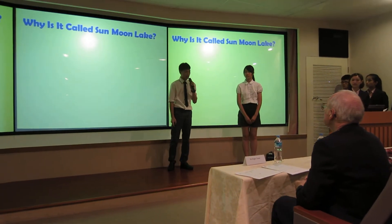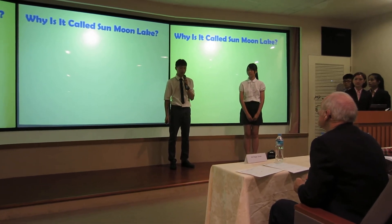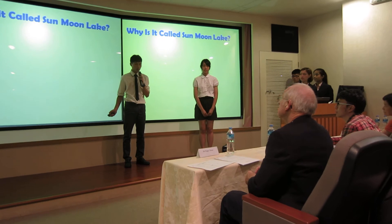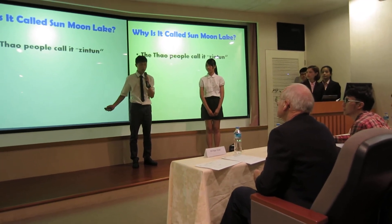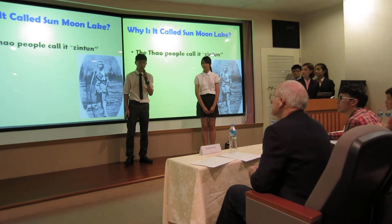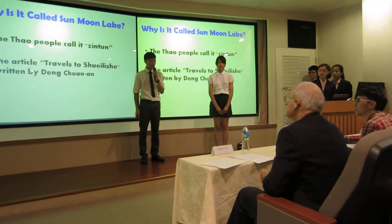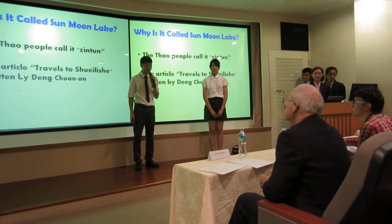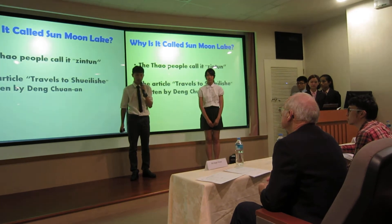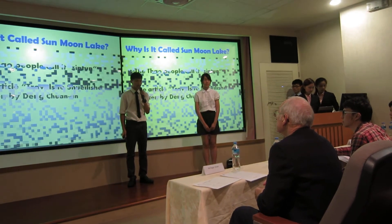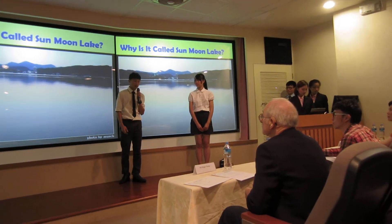First, why is this called Summerlake? There are two different things about how Summerlake was named. This one is the old one. Some of the South people called it Sento, which may have been the earliest name given to Summerlake. The earliest record of the name Summerlake was in the article Travel to Suri, written by Deng Chanheng in the 1820s, which said the water is red and green. So it's named Summerlake.